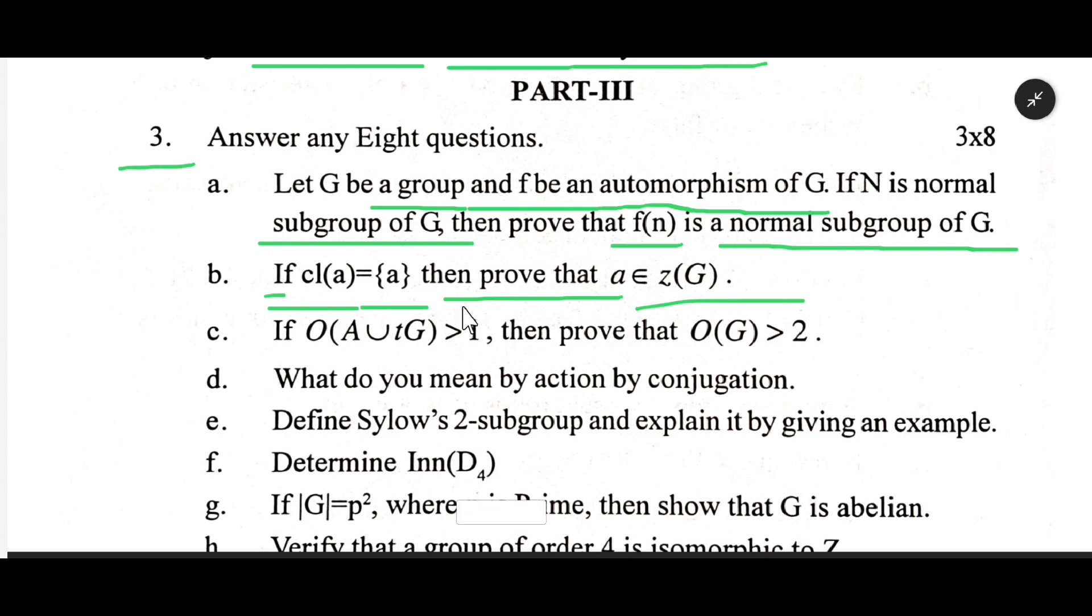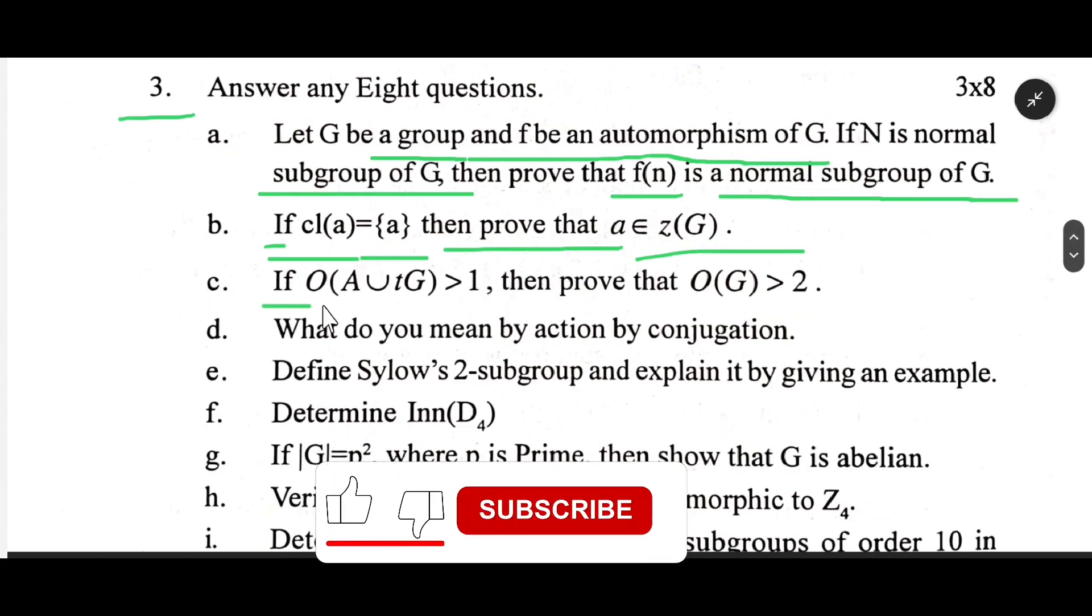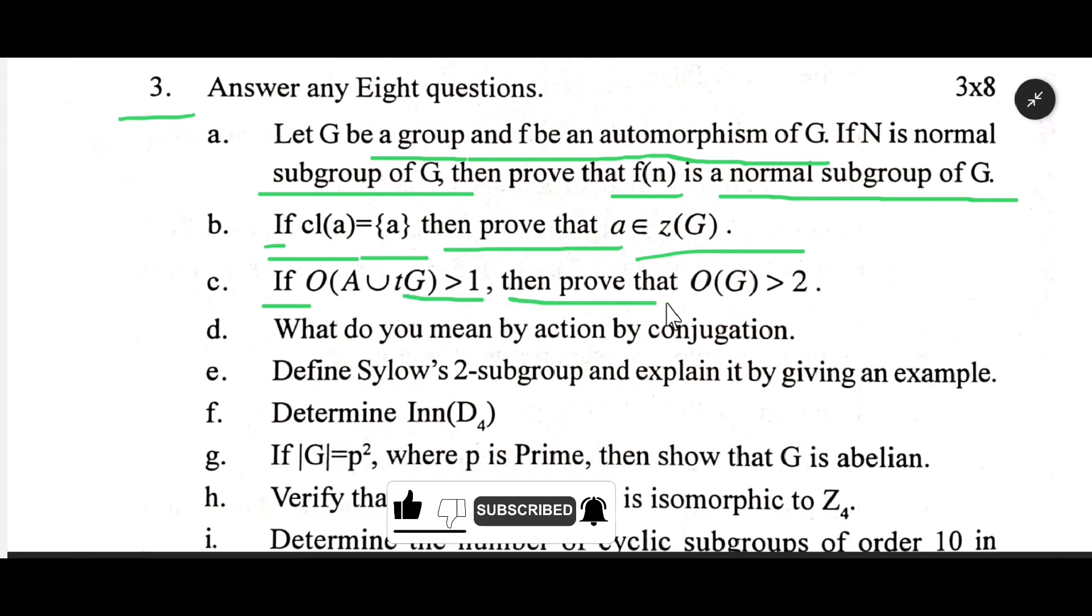If O(A ∪ {G}) > 1, then prove that O(G) > 2. What do you mean by action by conjugation?